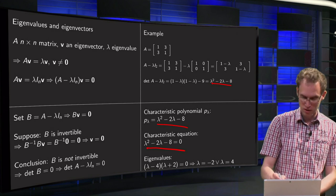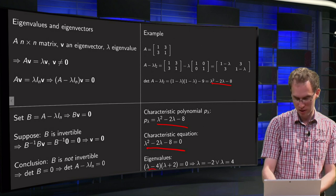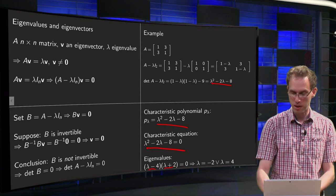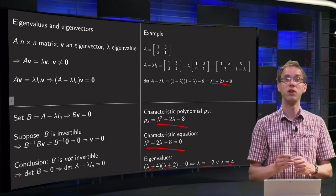Well, we can factorize of course: lambda minus 4 times lambda plus 2 equals 0. So we find lambda equals minus 2 and lambda equals 4.